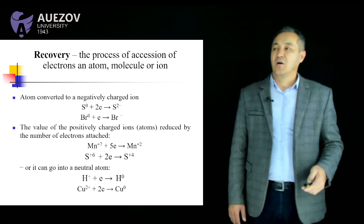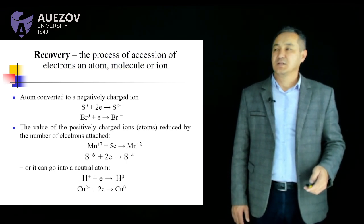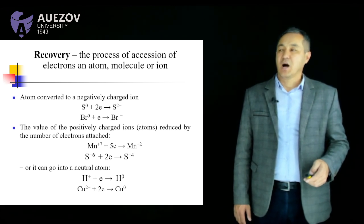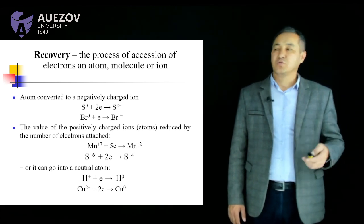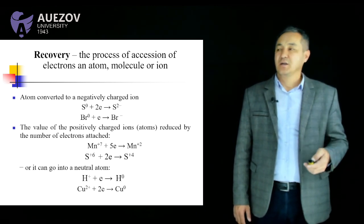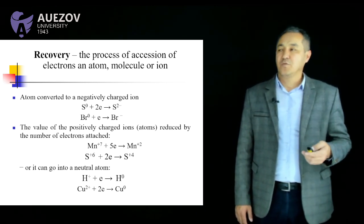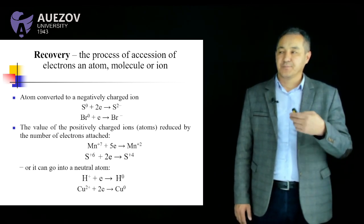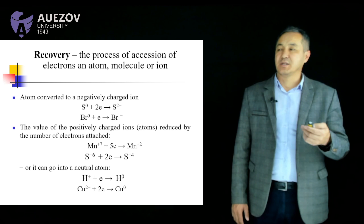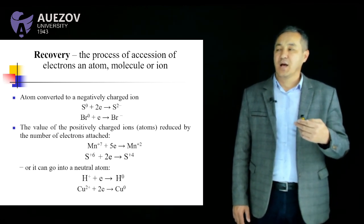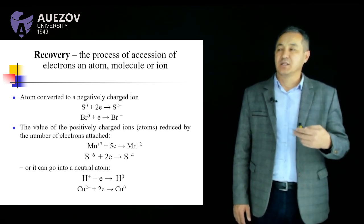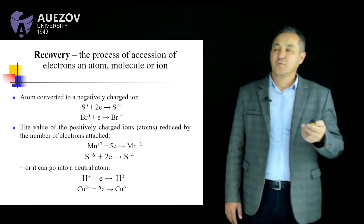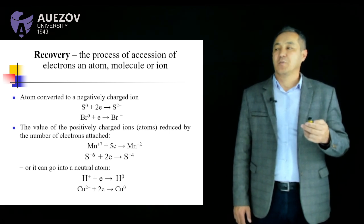Reduction is the process of gaining electrons by an atom, molecule, or ion. Atoms are converted to negatively charged ions. For example, sulfur and bromine ions can take one or two electrons and become sulfur ions and bromine ions.